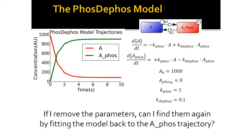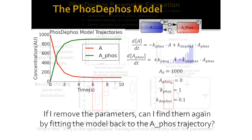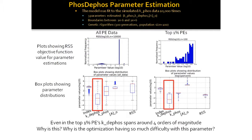So the question is: if I remove these parameters, can I find them again by fitting the A-phosphorylated vector, as we often do in systems biology? So that's what I did. The model was fit back to the simulated A-phosphorylation 10,000 times. Three parameters were estimated: the initial concentration of A, the phosphorylation parameter, and the dephosphorylation parameter.